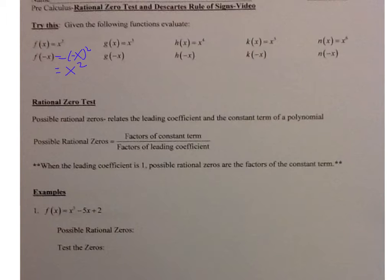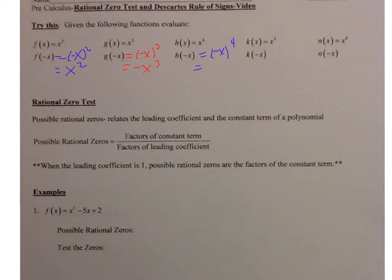Let's take a look at the next one. G of x equals x to the third power. Evaluating g of negative x gives negative x to the third power — negative x times negative x times negative x — which is negative x cubed. Then for x to the fourth: negative x to the fourth is positive x to the fourth. And for x to the fifth: negative x to the fifth is negative x to the fifth.